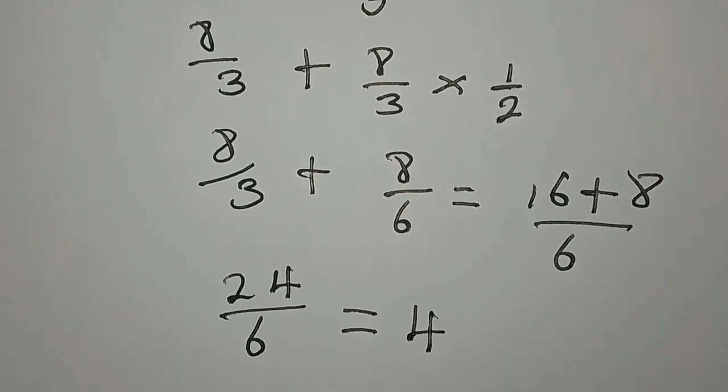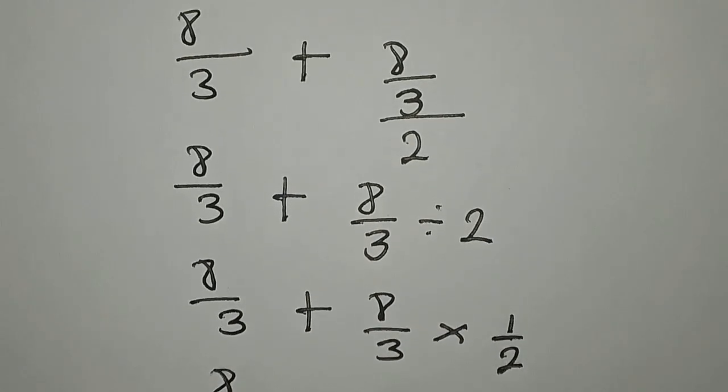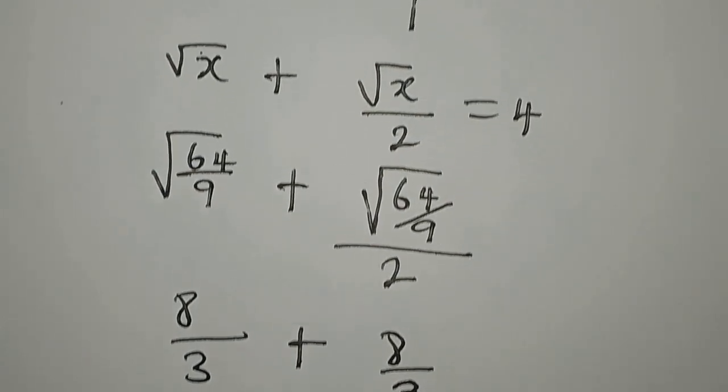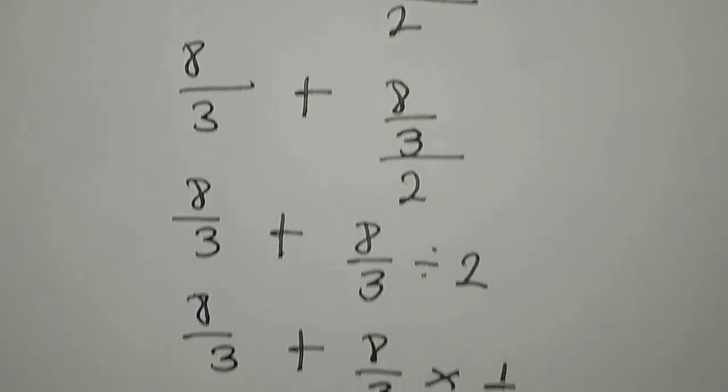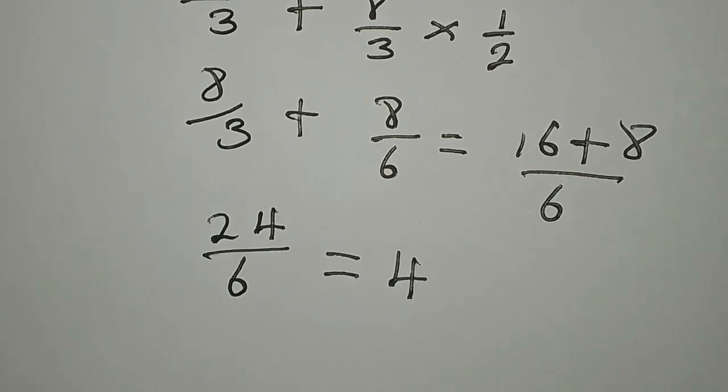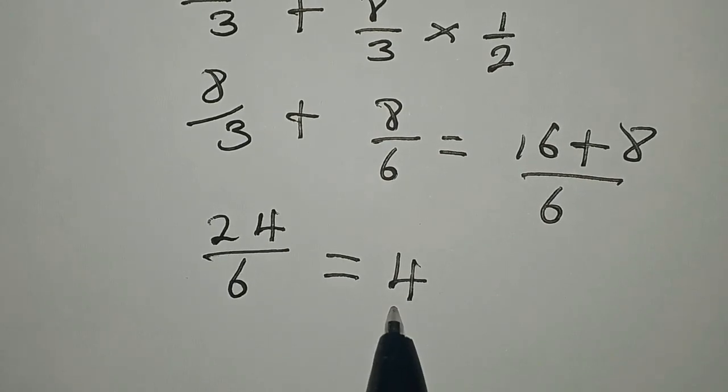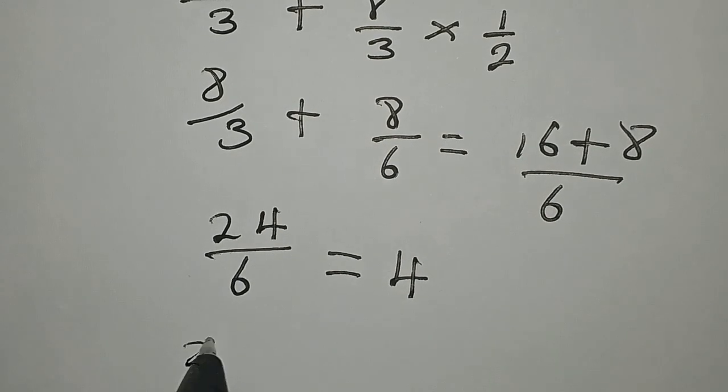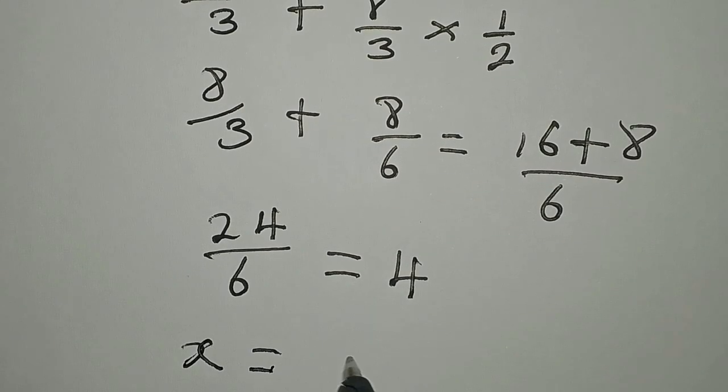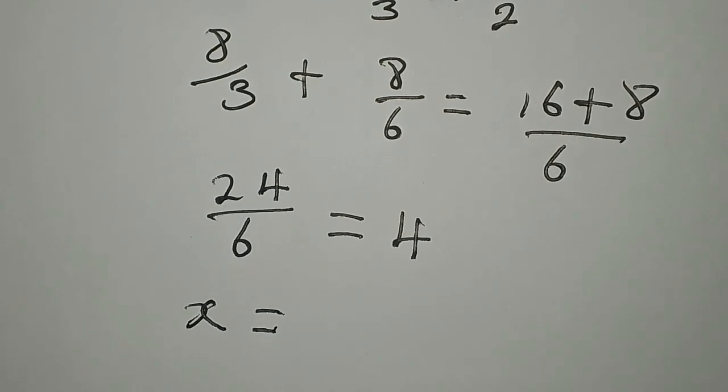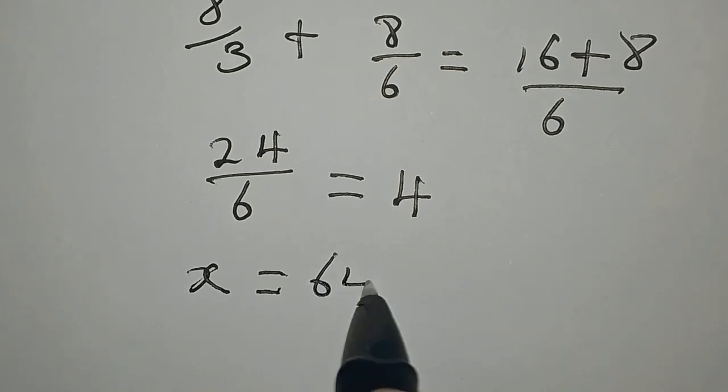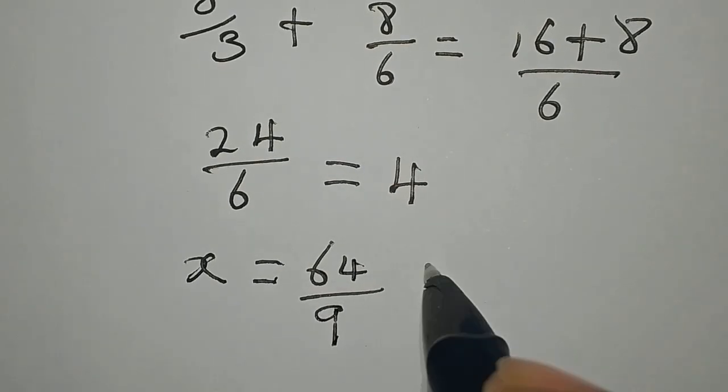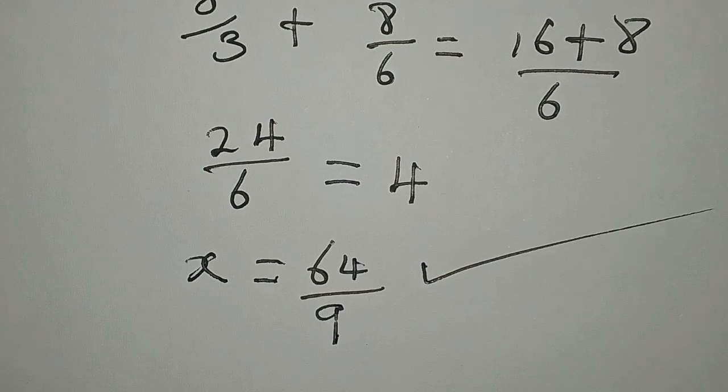And what did we have on the right-hand side of the equation? We had 4, right? And it's the same 4 that we have after verification. So x equal to 64 over 9 satisfies the equation.